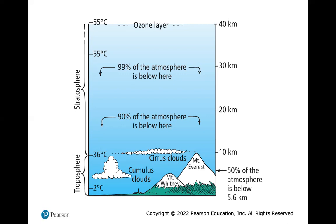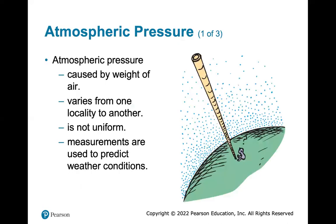Atmospheric pressure is caused by the weight of the air. It varies from one locality to another and is not uniform. Measurements are used to predict weather conditions — if pressure starts dropping, we're likely to get rain. If pressure is high, often called a heat high, we have hot weather for an extended period as long as that high-pressure system is over us.